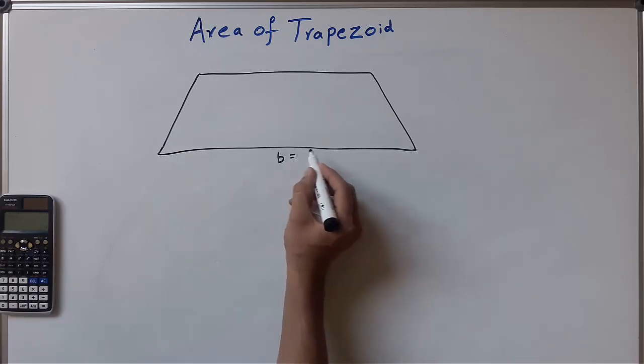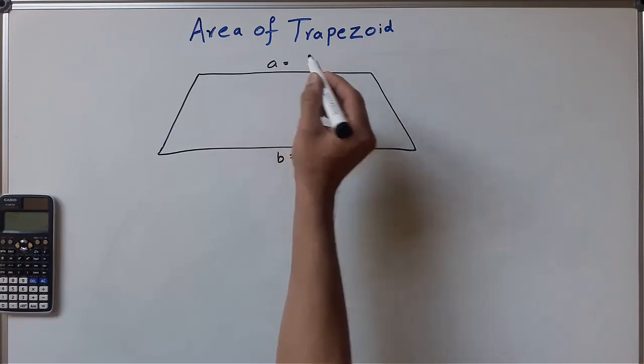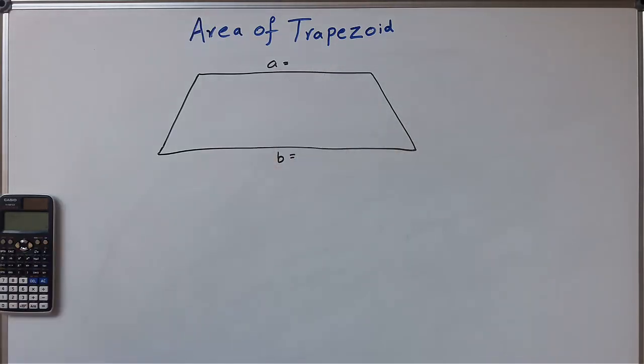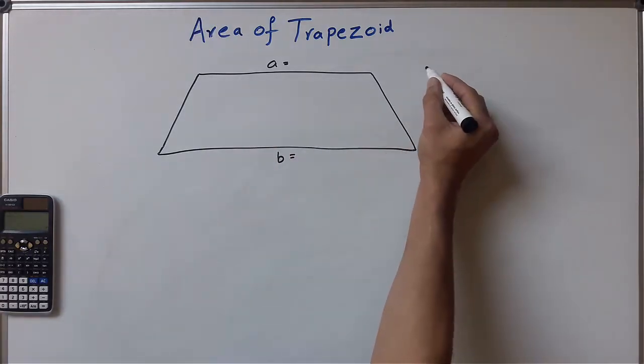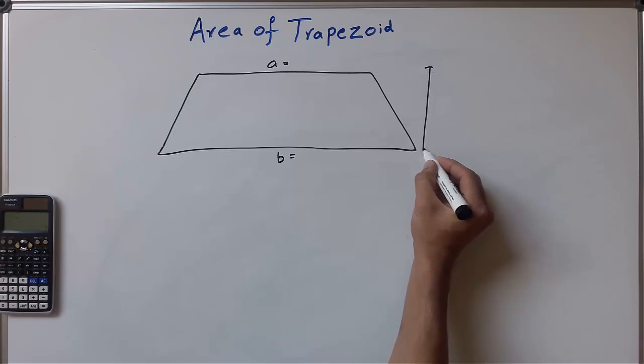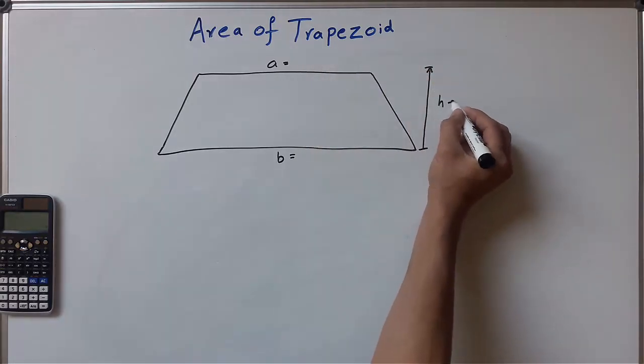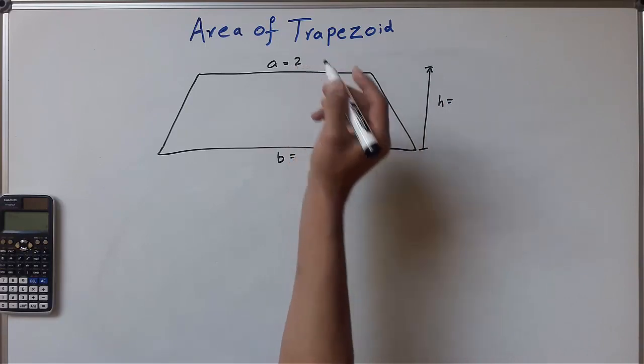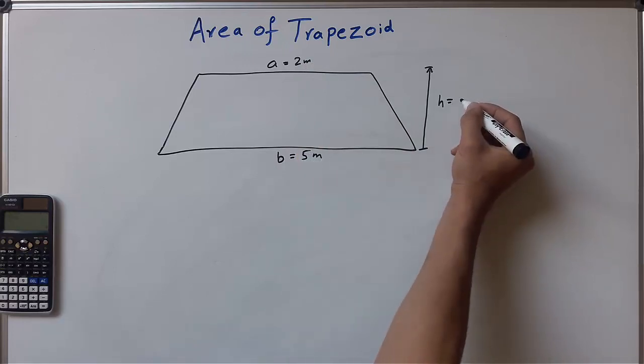A trapezoid has two different surfaces. We mention the surface with A and the base with B. In this case, this is the height, so we have 2 meters. This is 5 meters, and the height is 2 meters again.